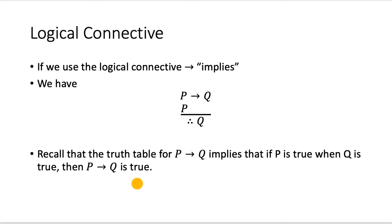Recall that the truth table for P implies Q implies that if P is true when Q is true, then P implies Q is also true. In fact, it's only when P is true and Q is false that P implies Q is false.